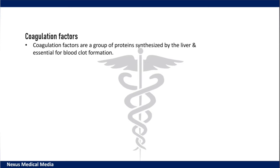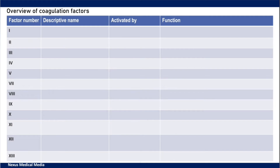Coagulation factors are a group of proteins synthesized chiefly by the liver and essential for blood clot formation. They take part in secondary hemostasis. They interact with each other in a cascade, so one product of a reaction will stimulate another reaction. We will talk more about it in a separate video. For now, let's just go through the clotting factors.